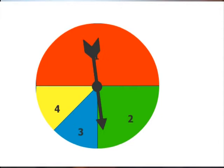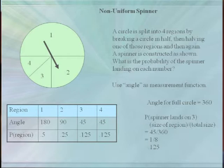Now suppose we created a non-uniform spinner. In this case, we can take our measurement function to be the angle measure that defines each region. The total possible measurement would be 360 degrees. So, for instance, the probability of spinning a three would be the angle measure of region three, which is 45 degrees, divided by the total. So the probability of the spinner landing on three would be 45/360, or 1/8.